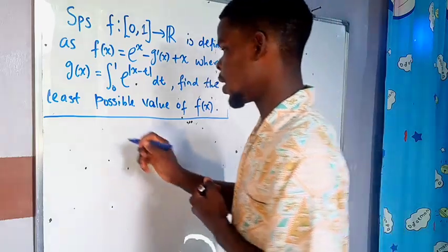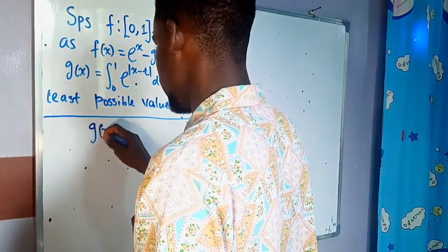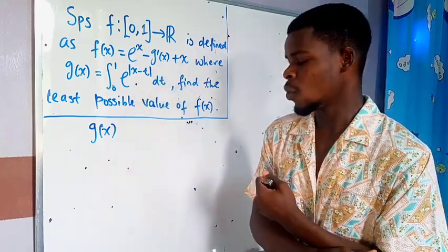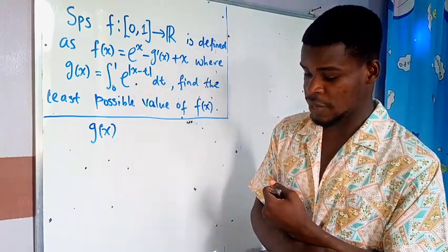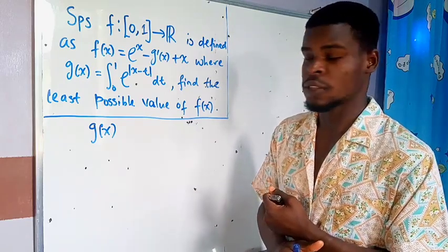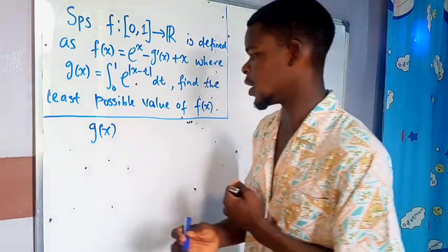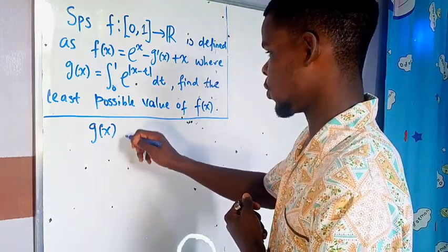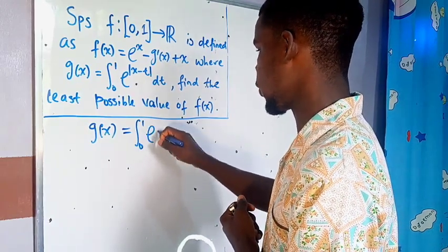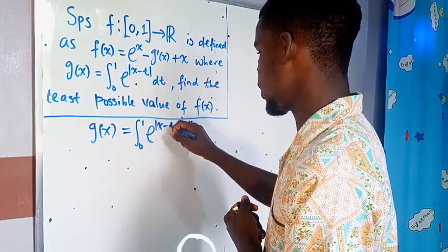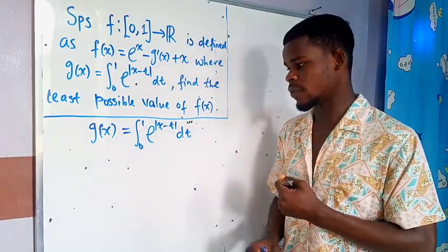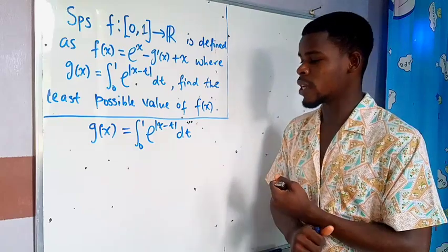Let's put down the function g(x). A similar question where you have an integral from 0 to some number was given in the 2023 JEE Main integral questions. So g(x) is going to be the integral from 0 to 1 of e to the power of absolute value of x minus t, dt. Notice that we are integrating with respect to t, so t lies from 0 to 1, and x also lies from 0 to 1.